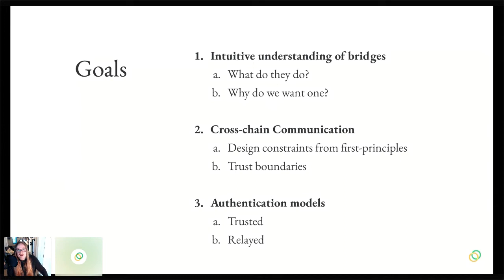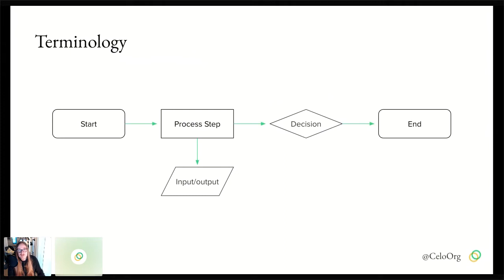After we talk about bridges and communication in general, I'm going to give two examples of how communication works in practice and discuss the trade-offs and pros and cons of each one. Throughout the talk, we're going to be using standard flowchart shapes. The rounded rectangles are the start and end. The rectangles are steps in a process. The parallelograms are inputs and outputs. Diamonds are decisions. For brevity, I've omitted some decision paths, so when you see a diamond with one whisker, assume the other path means everything falls apart and you do not get a bridge today.